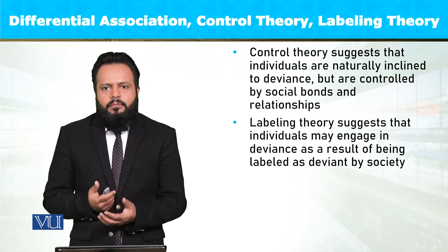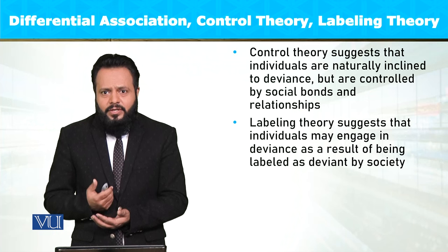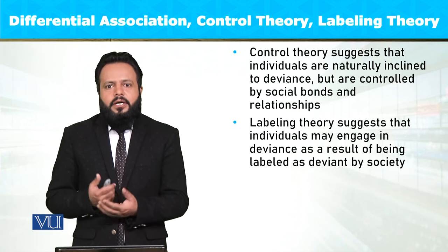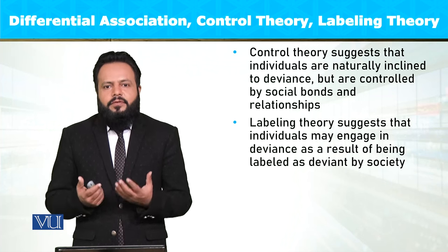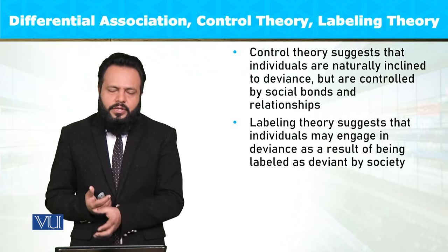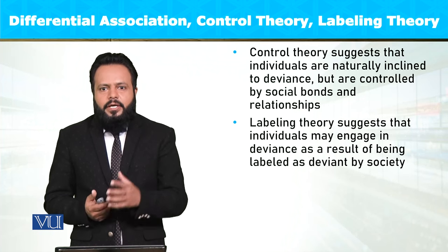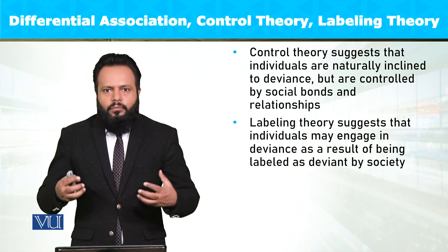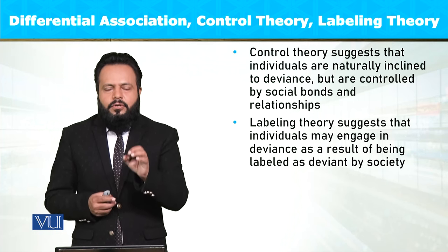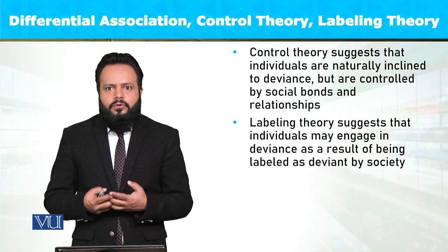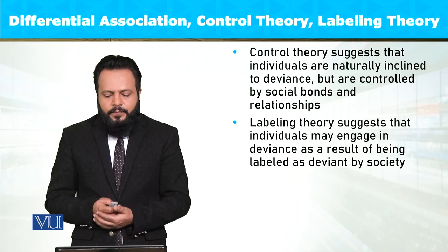یہ ضروری نہیں ہے کہ ہم ہر وقت conformist رہیں۔ ہمارے اندر deviancy کی propensity ہمتن موجود رہتی ہے، اسی وجہ سے ہم creative اور innovator ہوتے ہیں۔ Social control theory یہ suggest کرتی ہے کہ ہم ایسے behaviors کو differently control کر سکتے ہیں — social bonds اور relational bonds کے through۔ جو کسی بھی cultural context کے اندر زیادہ embedded ہوگا، اس کے bonds of relationship زیادہ strong ہوں گے اور اس کے لئے social control کا mechanism زیادہ develop ہوگا۔